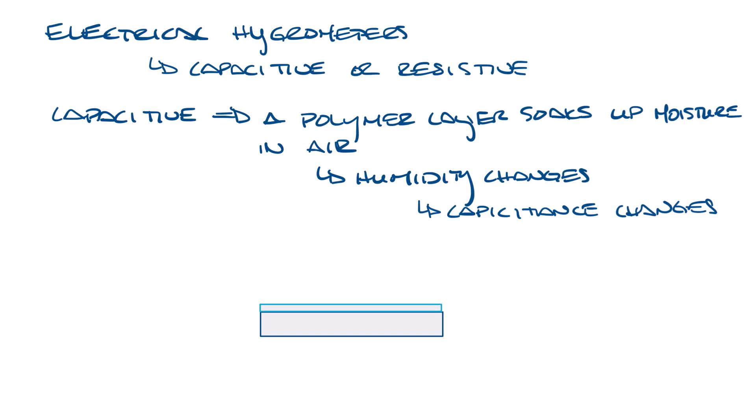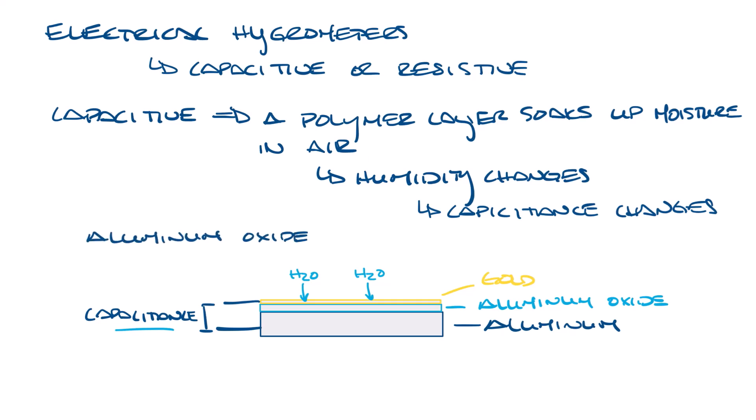The sensor consists of an aluminum strip that is anodized by a process that forms a porous oxide layer. Then the structure is coated with a thin layer of gold. As water enters the sensor, the dielectric constant of the aluminum oxide layer changes, which alters its capacitance. An aluminum oxide capacitive sensor is an example of a capacitive sensor.